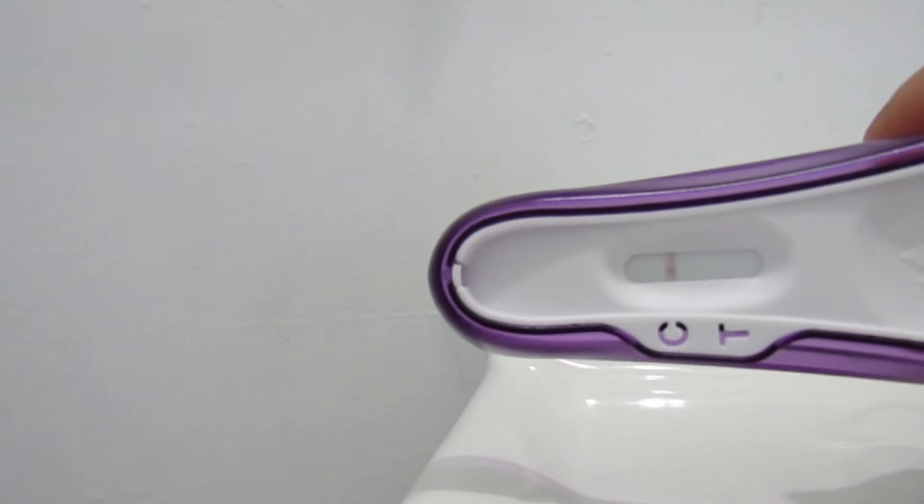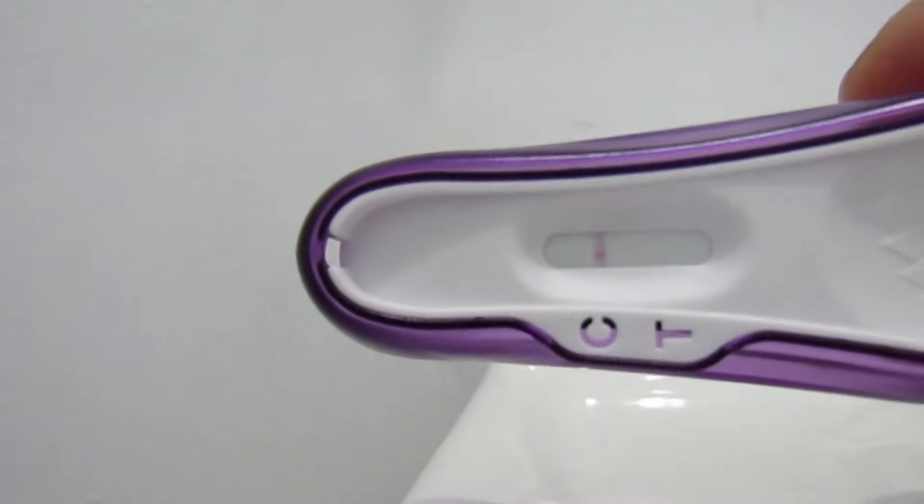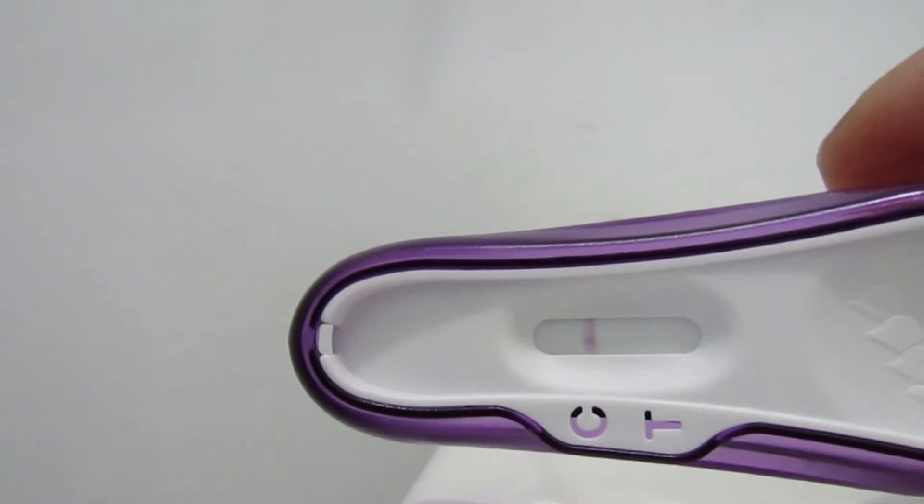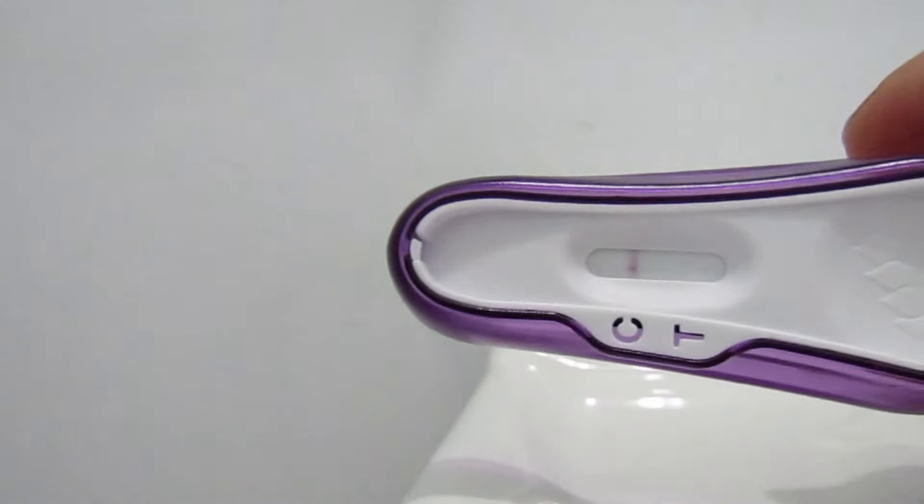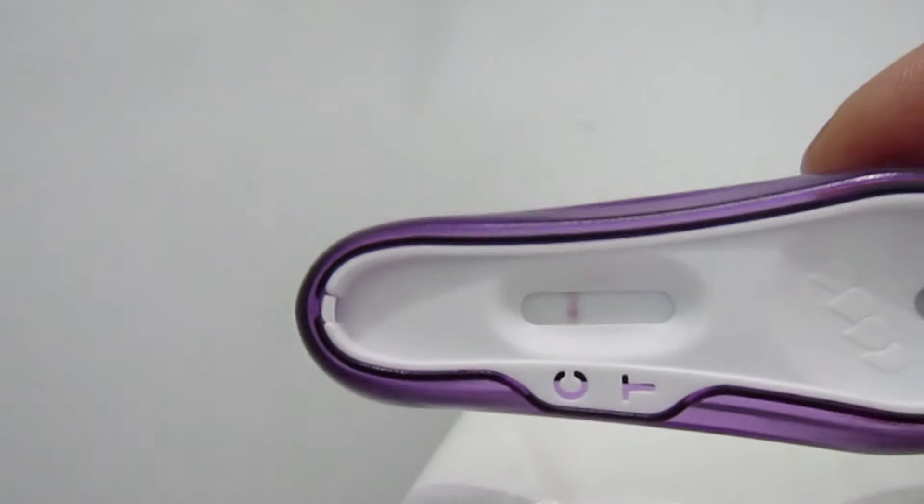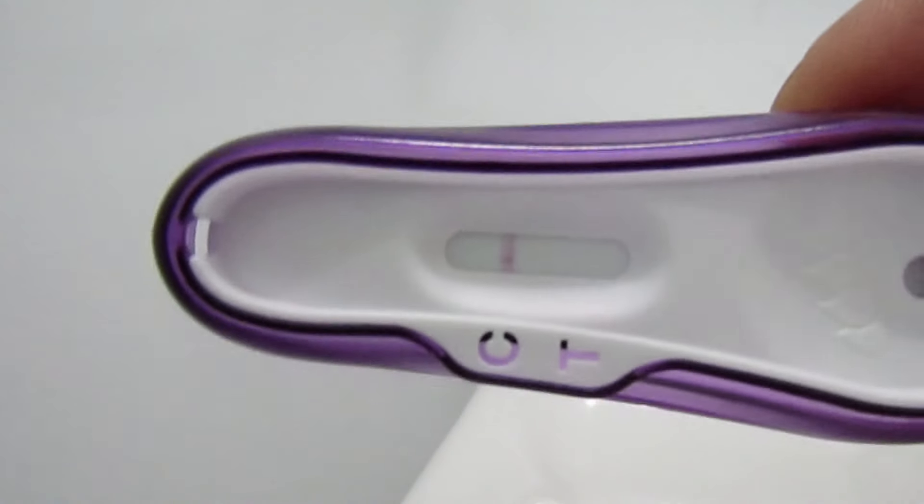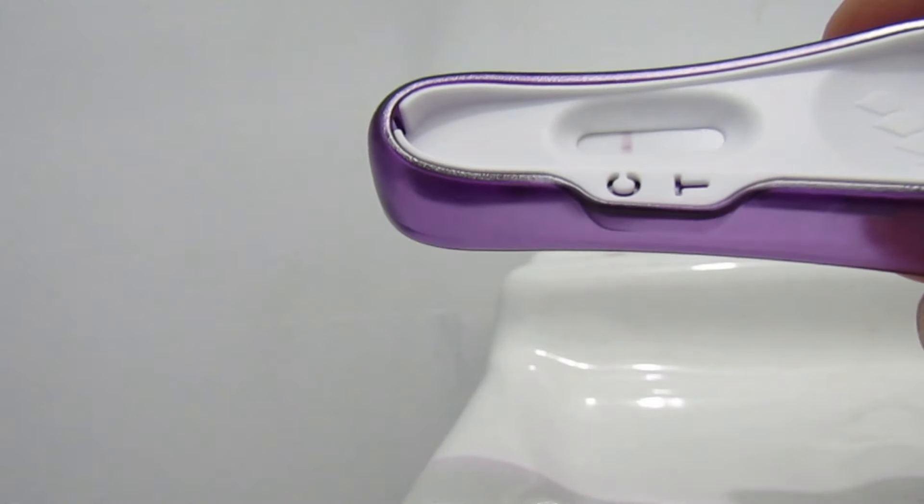So, if all else fails and these tests maybe were beginning to be positive, 13 DPO should definitely give us clear answers because I should be getting some type of a line by then since it's way closer to AF. Usually, I get AF around 14 DPO. So, I think that's what we'll do. I don't think I'll take a test for tomorrow.